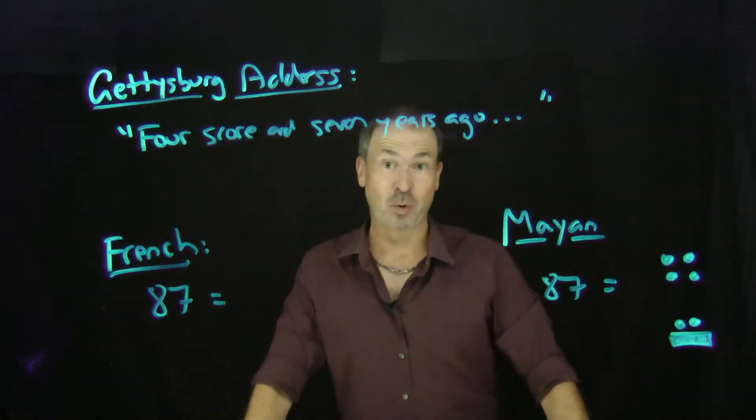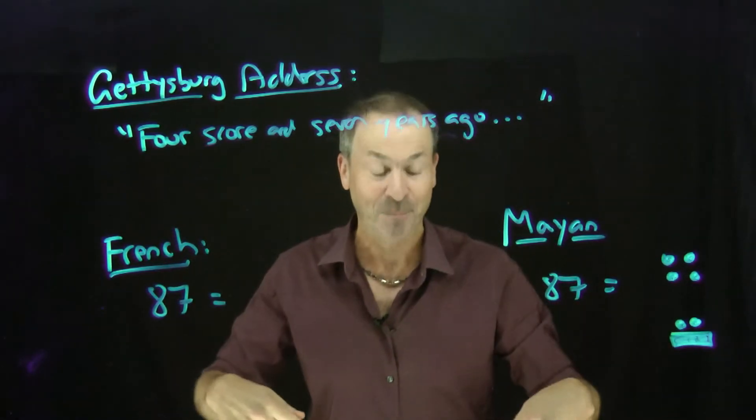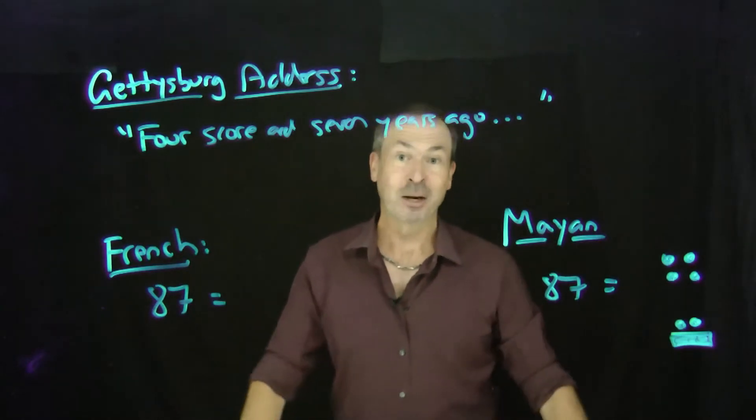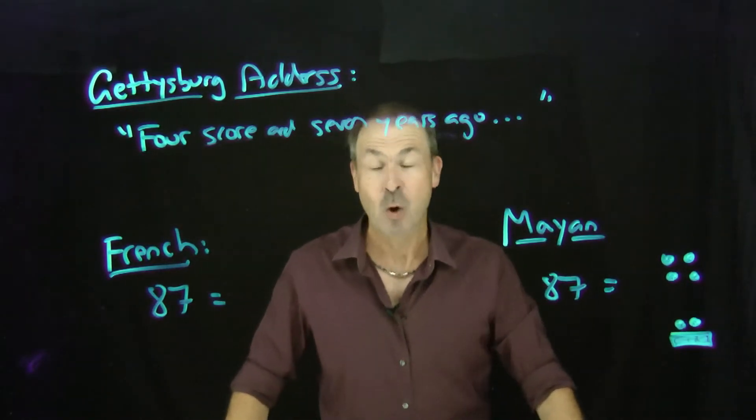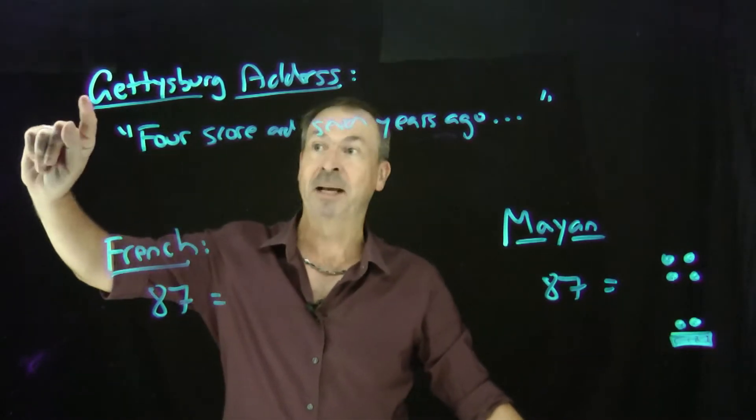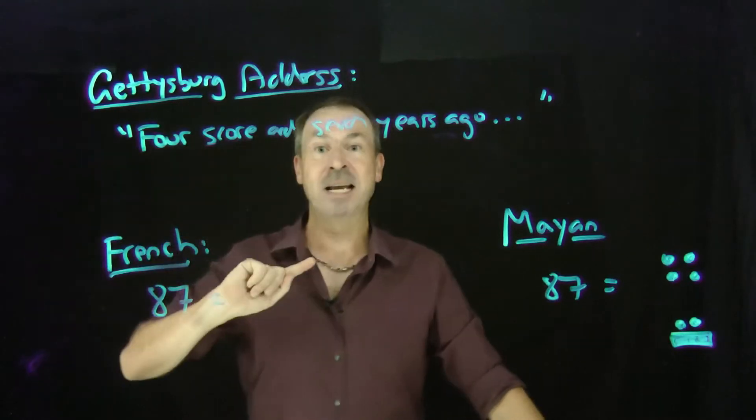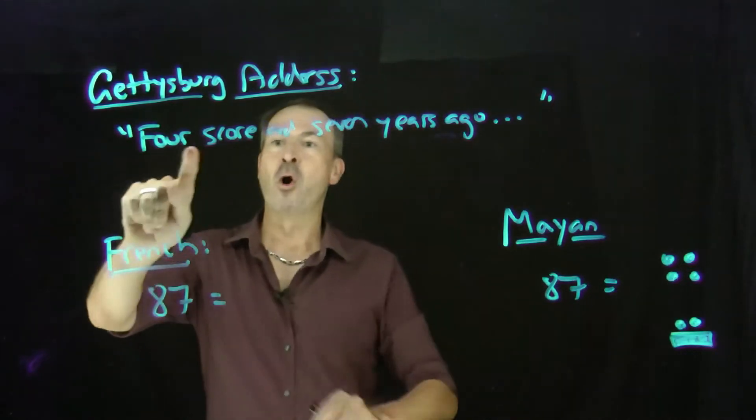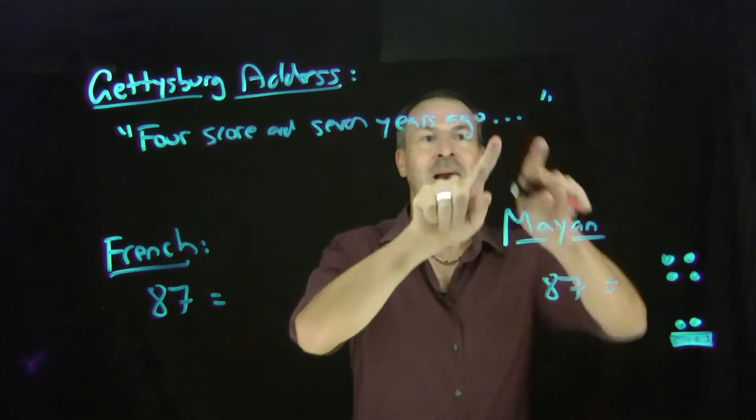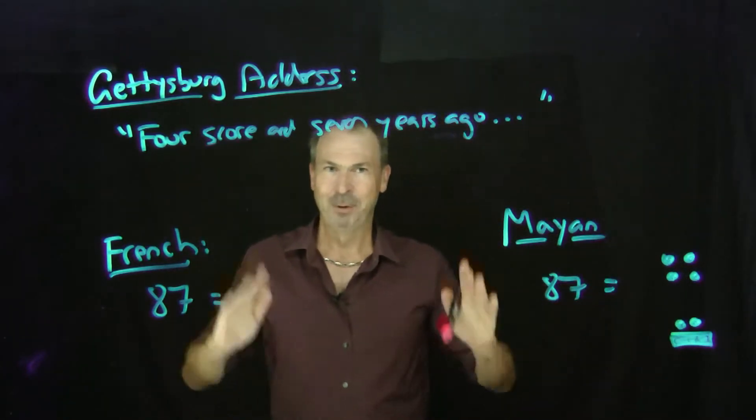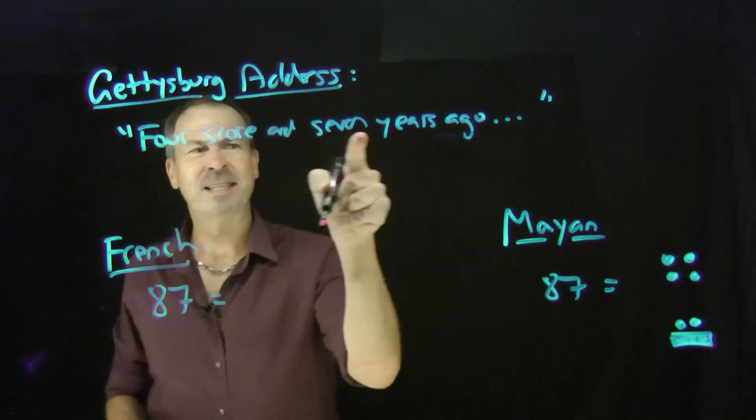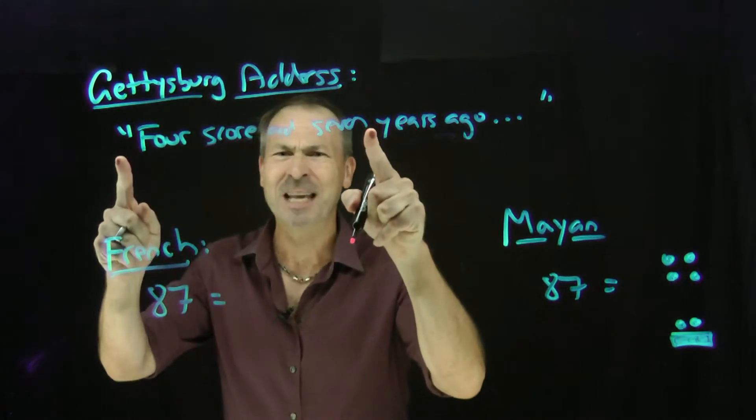In fact, we have some vestiges of base 20 still in our Western cultures today. For example, a very famous American president by the name of Abraham Lincoln once gave a very famous address called the Gettysburg Address. And it began as follows: Four score and seven years ago. Four score and seven.